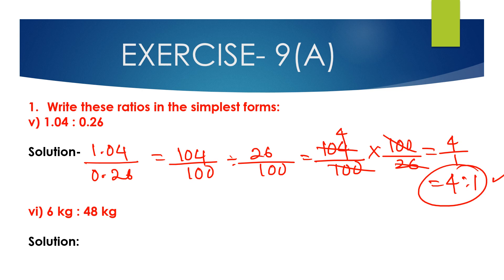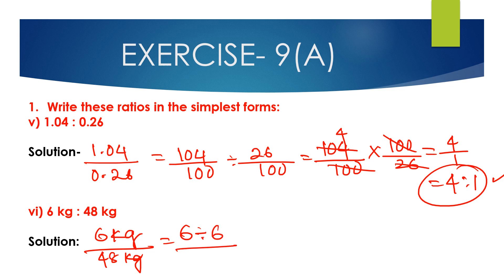Now 6th bit: 6 kg is to 48 kg. We can write 6 kg divided by 48 kg. Between 6 and 48, 6 is the common factor. Divide the antecedent 6 by 6 and the consequent 48 by 6. 6 divided by 6 is 1 and 48 divided by 6 is 8. So 1:8 is the simplest form of the ratio 6 kg is to 48 kg.